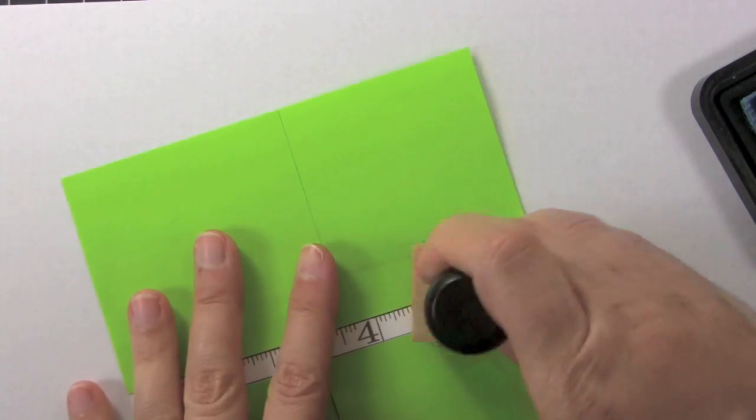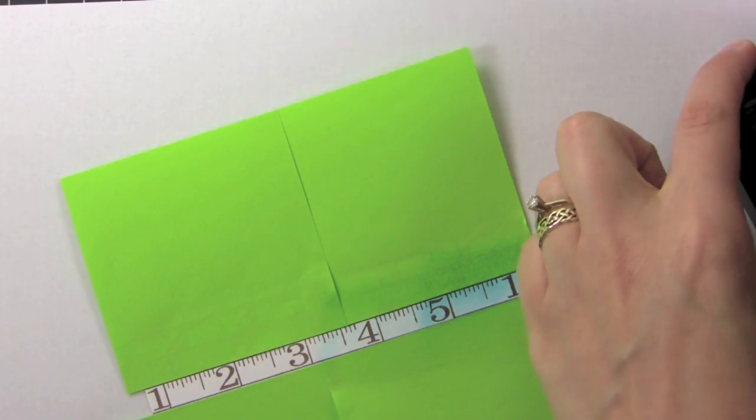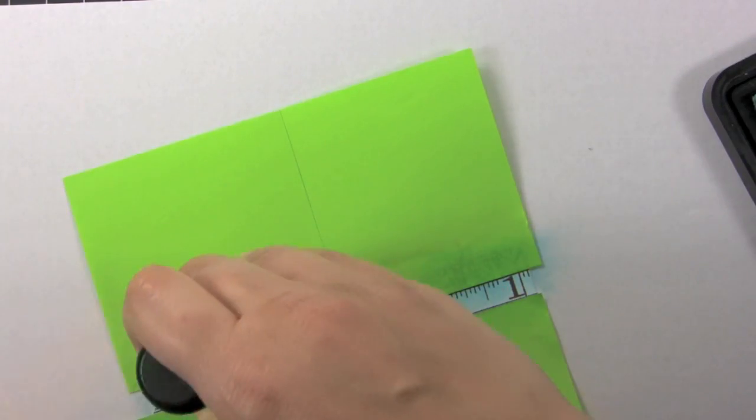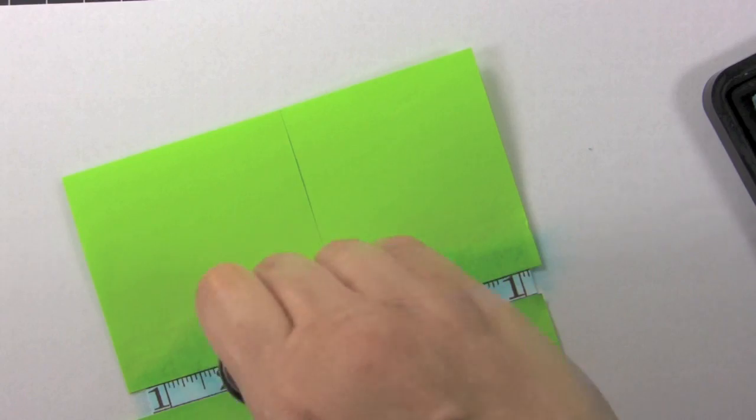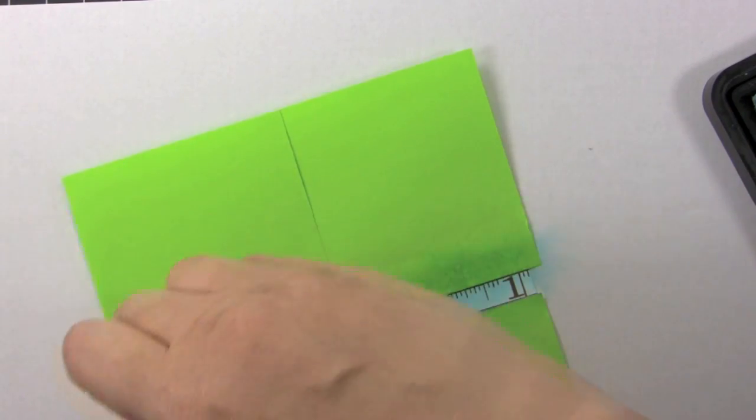So you just want to take the foam applicator tool and get lots of ink on it and then go ahead and just rub it right on the masked off area. So this will make it a nice blue.